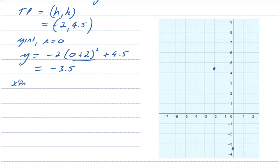And for our x-intercepts, we have y equals 0. So that's negative 2 times x plus 2 all squared plus 4.5. I'm going to complete some inverse operations by subtracting 4.5 from both sides and dividing both sides by negative 2. That's x plus 2 all squared.